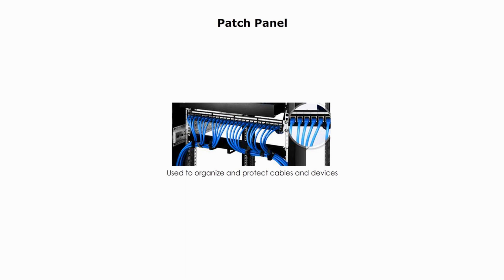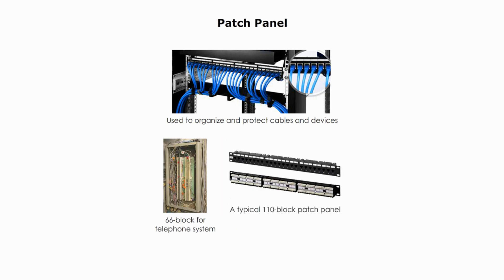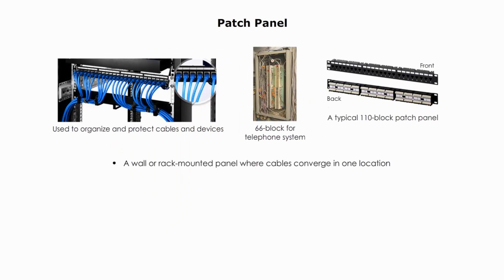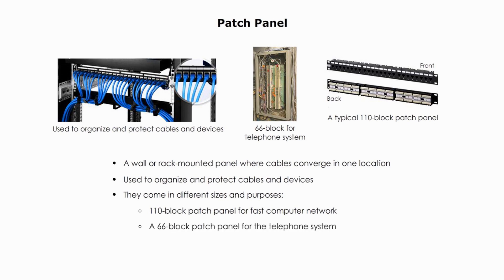Patch panels are used to organize and protect cables and devices. Without patch panels, devices would be connected directly, which would easily create a cable mess and cause a lot of trouble. By definition, patch panels are wall- or rack-mounted panels where the cables converge in one location. They come in different sizes and purposes. For example, a 110 block patch panel is for fast computer networks, and a 66 block patch panel is used for telephone systems. The most popular patch panel has 24 ports.